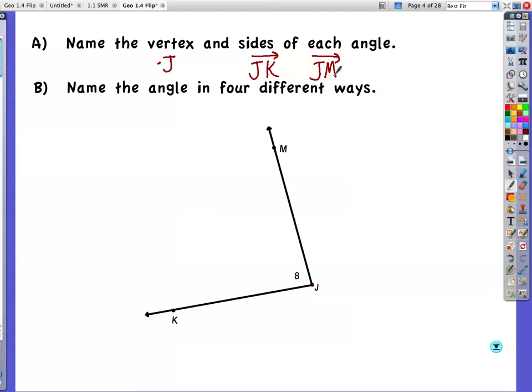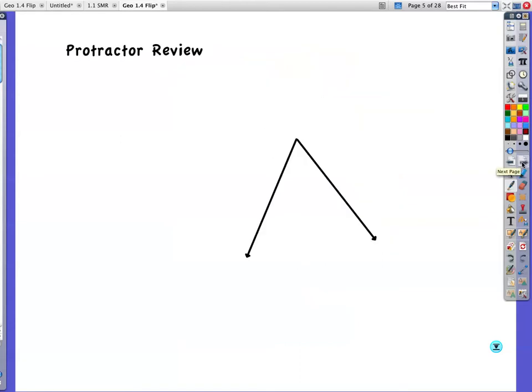Name the angle in four different ways. So one way is angle MJK. Another is angle KJM. You can say angle J. In this case, you can get away with it. If there's many more lines and rays and angles, then you will not be able to get away with just angle J. And then they also marked that with an 8. So they said angle 8, which sometimes you're going to see a number representing an angle.